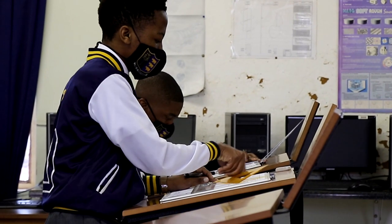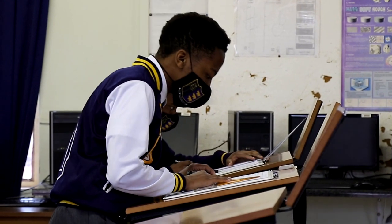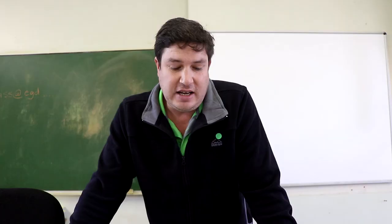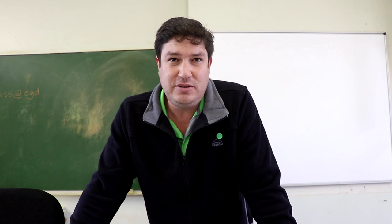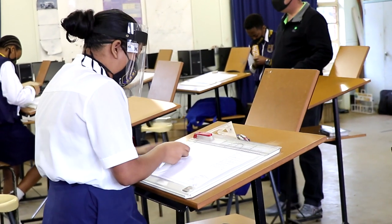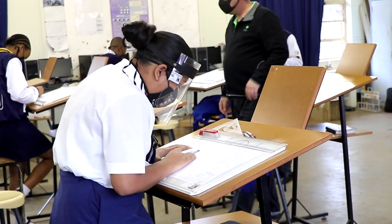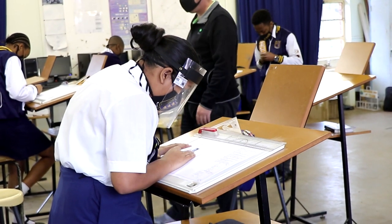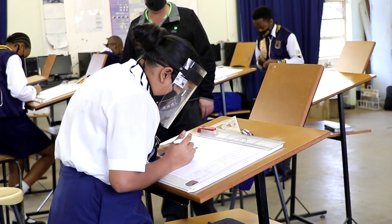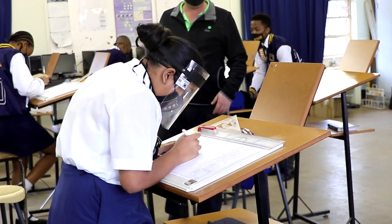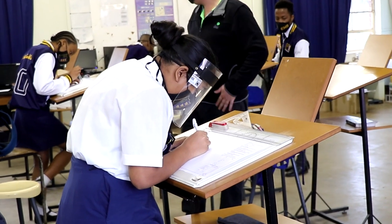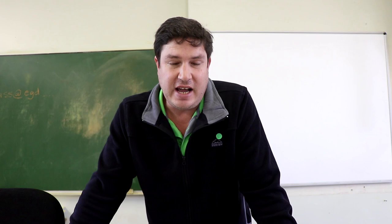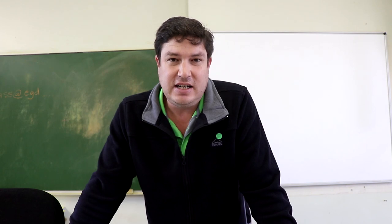You will need the following equipment: two flip files, an A3 drawing board and T-square, a drawing pencil, eraser, ruler, 30-60 degree set square, 45 degree set square, a drawing compass, a protractor, and a calculator.